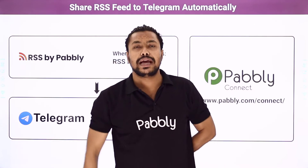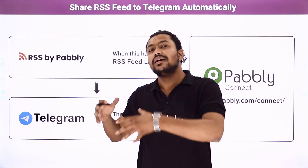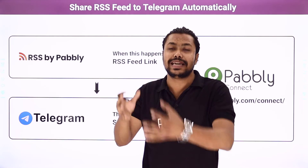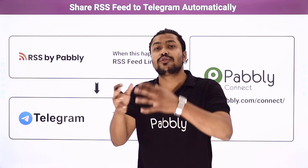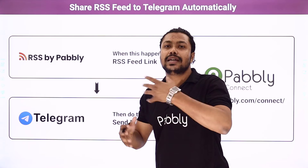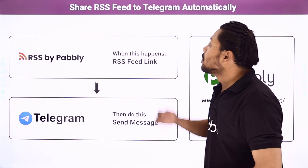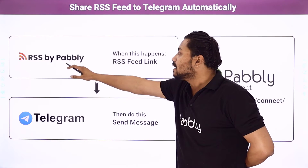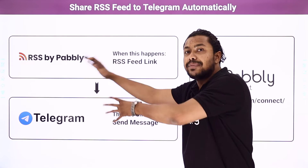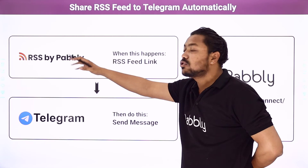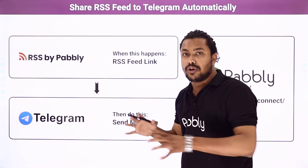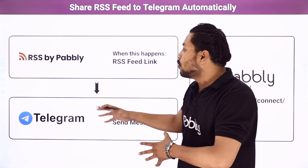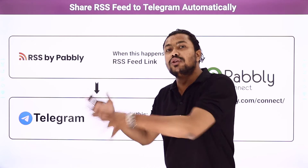Suppose you are a food blogger and you are tracking several food sites which are giving you information regarding different recipes, different tastes, and different types of foods from different places — be it states, cities, countries, etc. You can take the RSS feeds from those websites and use that in Pably Connect to directly send that information to a particular Telegram group where people have been following you especially for food blogging.